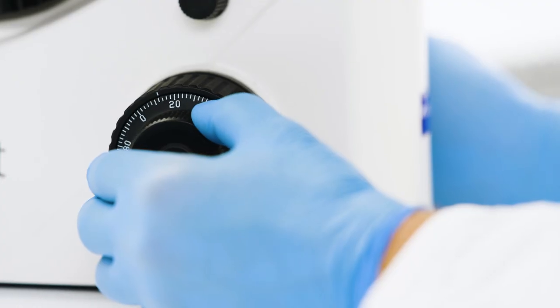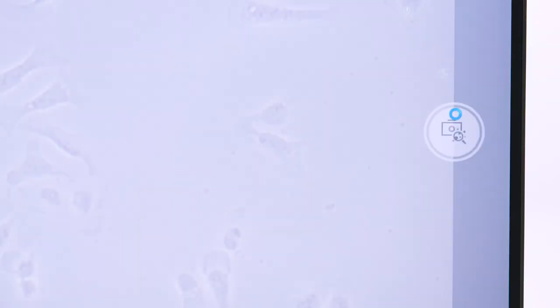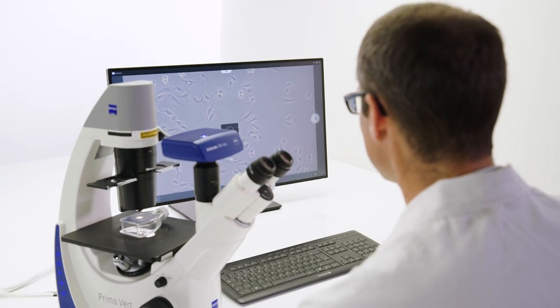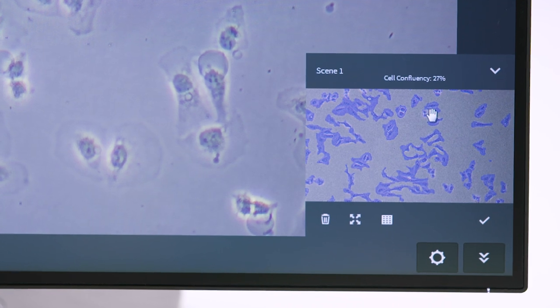Now you're ready to focus your sample. Snap an image. Using artificial intelligence, the percentage of cell coverage in your cell dish is automatically and instantly measured and displayed.